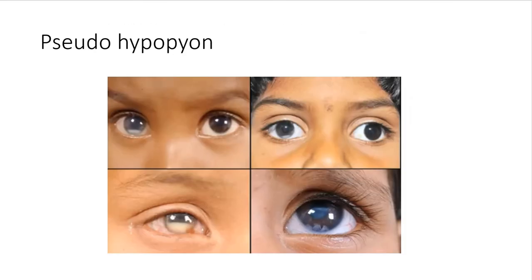Pseudo-hypopyon can also happen. Looking at these multiple pictures, there is a fluid level that you might think is hypopyon, or mistake for endogenous endophthalmitis. However, all of these children were proven to have retinoblastoma.